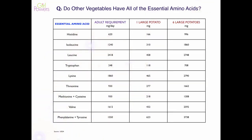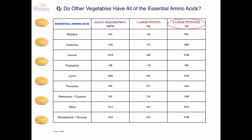Do other vegetables have all of the essential amino acids? The answer is yes. Looking at a large potato, we see the essential amino acid listed, the adult requirement in terms of milligrams per day, what one large potato contains, and what six large potatoes contain. Six large potatoes do deliver in terms of the requirements — not that you necessarily want to eat six potatoes, but the point is that other vegetables do have all of the essential amino acids.